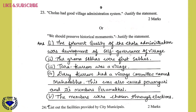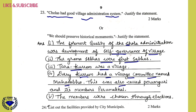Question 23: Cholas had a good village administration system — justify the statement. The foremost quality of Chola administration was the development of self-governance of villages. The Gram Sabhas were the first Sabhas. Each Kuram was a village unit, and every Kuram had a village committee named Mahasabha, also called Perumguri, and its members were called Perumakkal. The members were chosen through elections.